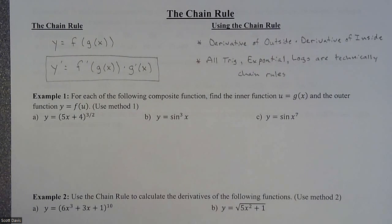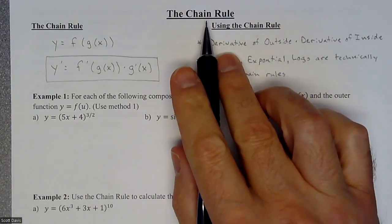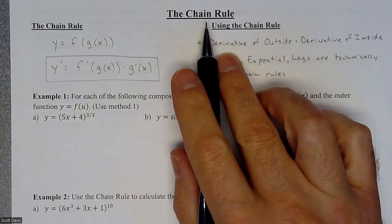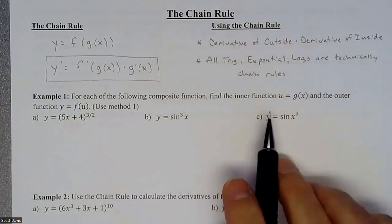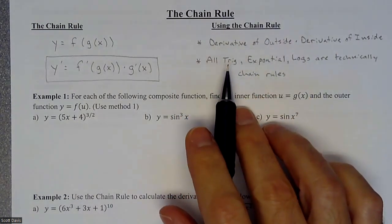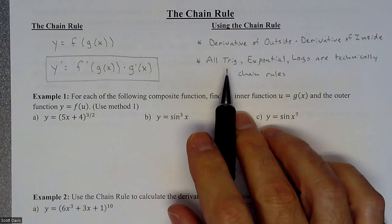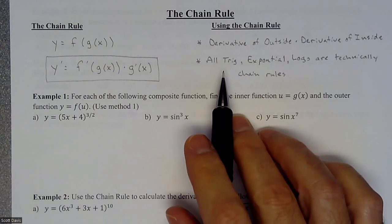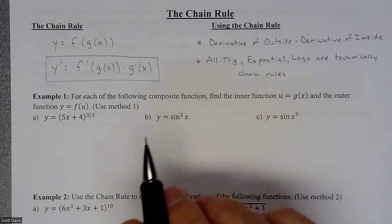We are going to begin the chain rule. The chain rule happens way more frequently than what we've kind of let on. There are certain ones that we really have skewed the problem to where you didn't have to use a chain rule, but really we should have been using the chain rule. We'll talk about that when we get to a couple examples.